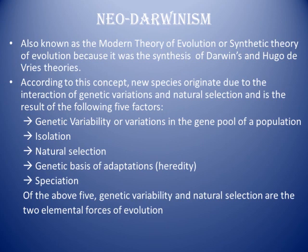Two major forces which lead to the origin of new species are genetic variations or genetic variability and natural selection. The formation of new species results from five factors: genetic variability — which is variation in the gene pool (the total number of genes present in a population of a species) — isolation, natural selection, genetic basis of adaptability, and speciation. Out of these five, the two most important are genetic variability and natural selection.